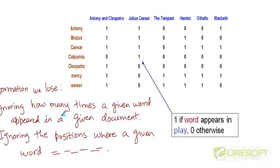We are losing this information, this count of how many times Brutus appeared in this play and so on. The other information that we are losing here in generating this term document incidence matrix is that we are losing the positions where a given word appeared in a given document.